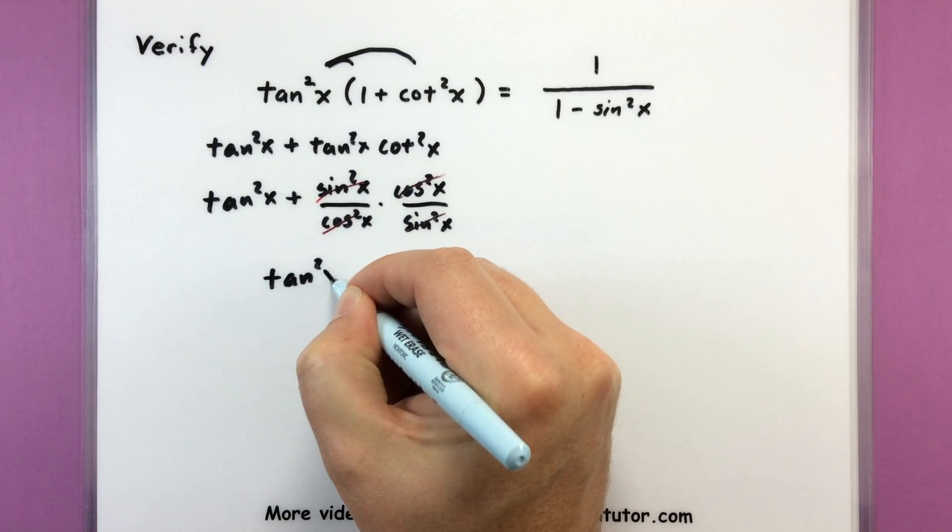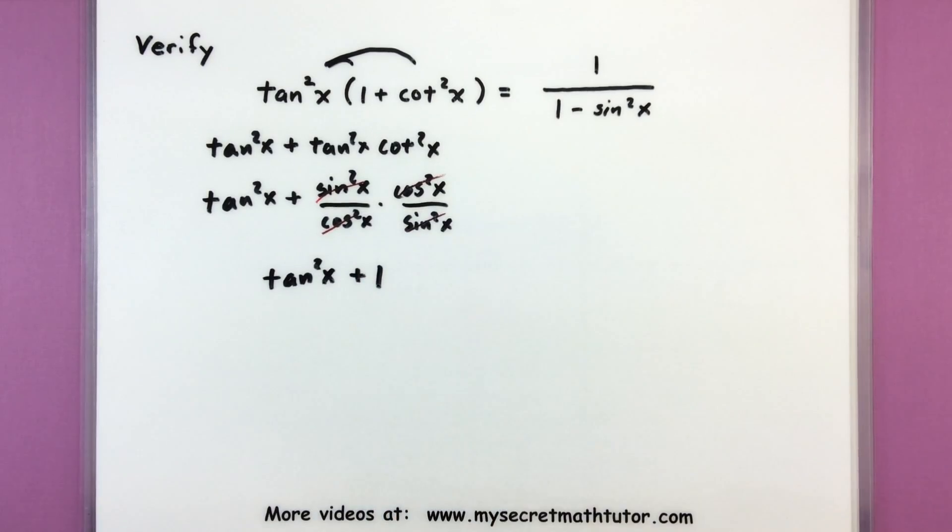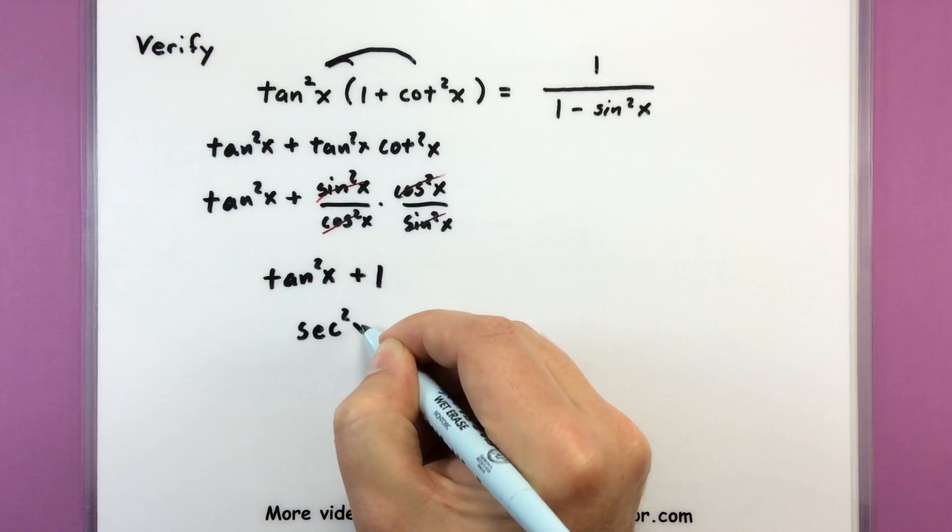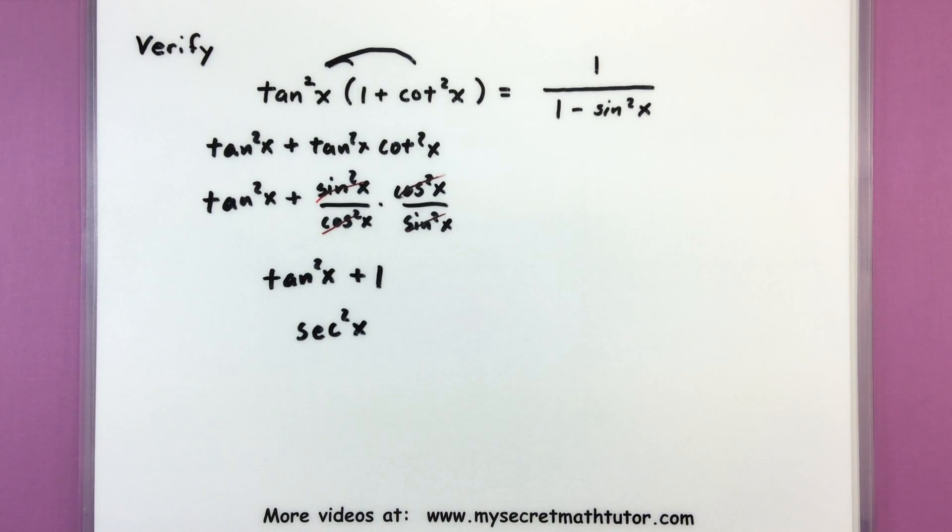So tangent squared of x plus 1. Now that's pretty good but still not looking like the right side. Fortunately this is another one of our Pythagorean identities. All of this is actually equal to secant squared.